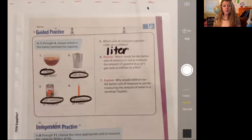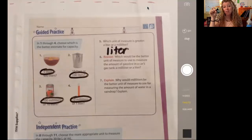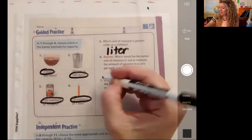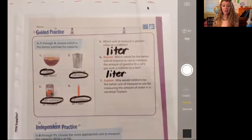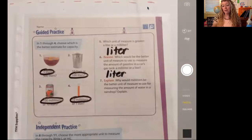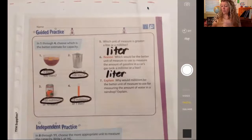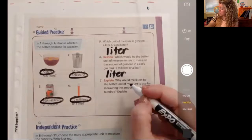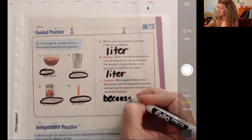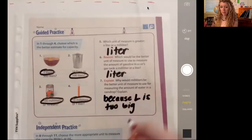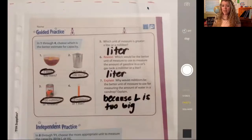Which would be the better unit of measure to use to measure the amount of gasoline in a car's tank? Well, let's think if we sat there using this little dropper to measure the amount of gasoline, you're going to be there for a long, long time. So what would we use? We would use a liter. And then why would milliliters be the better unit of measure to use for measuring the amount of water in a raindrop? Explain. What do you think? Why would we want to measure the amount of water in a raindrop in this instead of this? If you said, because liters is too big, you're exactly right. We can't measure the amount of raindrop using such a big unit. So we would use milliliters. Milliliters would be better because liters is too big. And speaking of being big, I know that my expo marker here is a little bit fat to be writing on here. So bear with me as it takes up a little bit of space on our practice pages here.